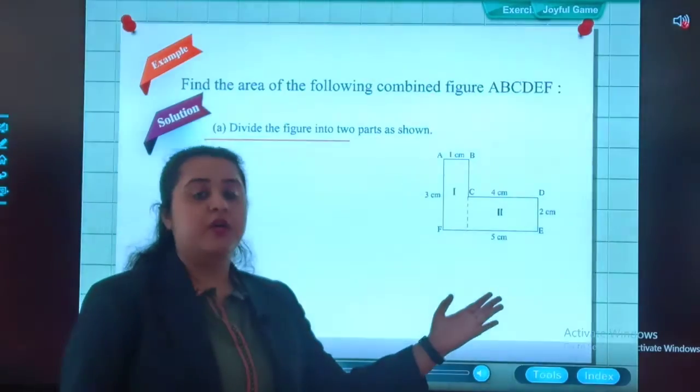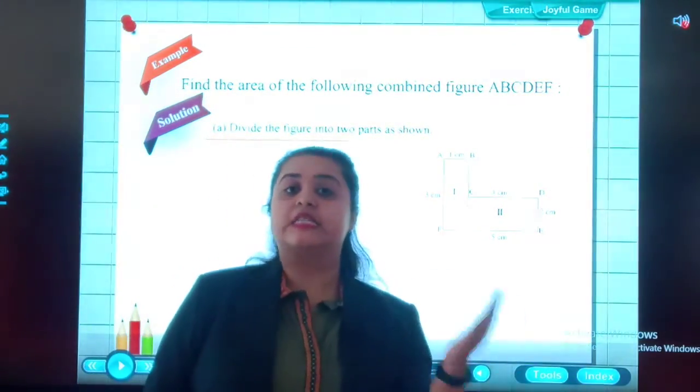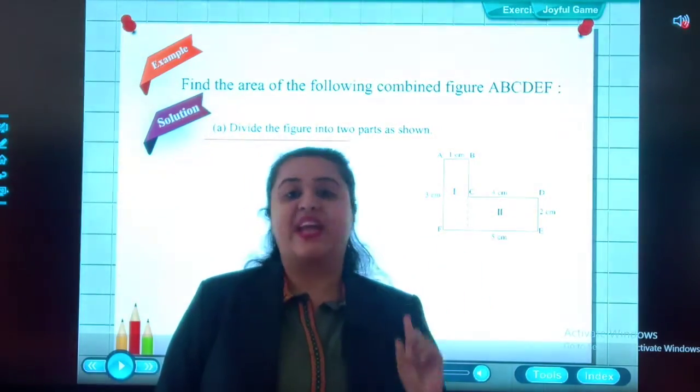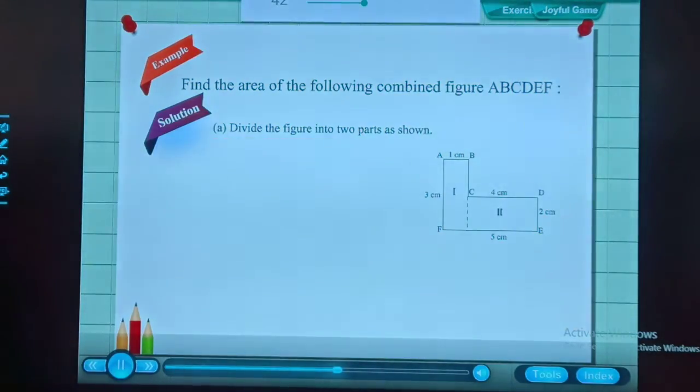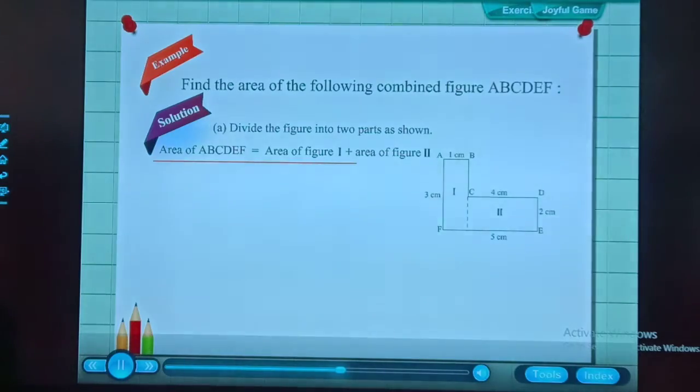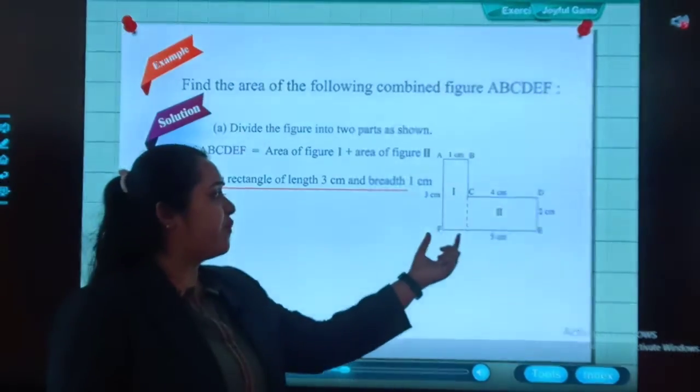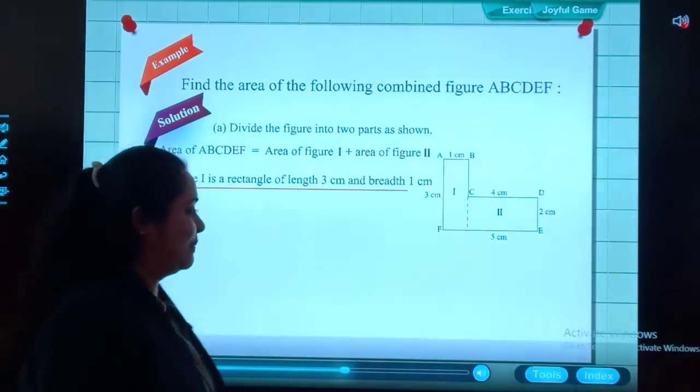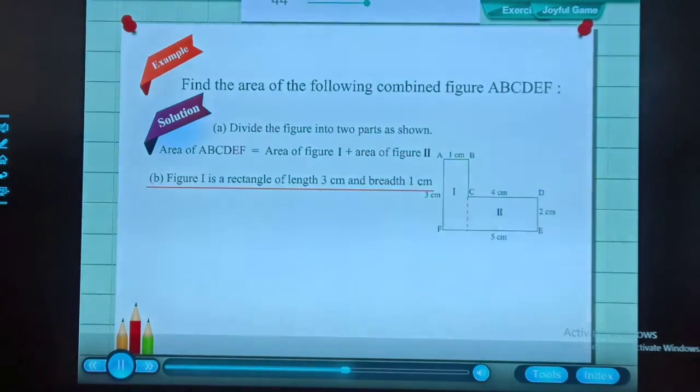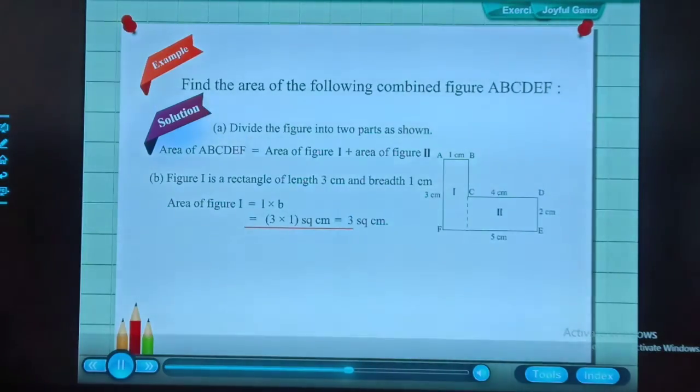For example, find the area of the combined figure ABCDEF. Resolution: divide the figure into two parts. Students, this is your figure. So first we will observe the figure and divide it into square and rectangle, then we will find the area. Area of ABCDEF equals area of figure 1 plus area of figure 2. Figure 1 is a rectangle of length 3 cm and breadth 1 centimeter. Area of figure 1 equals length into breadth, which is 3 × 1 = 3 sq cm.